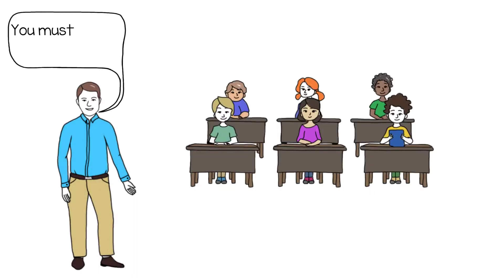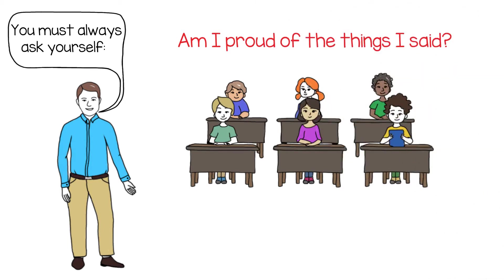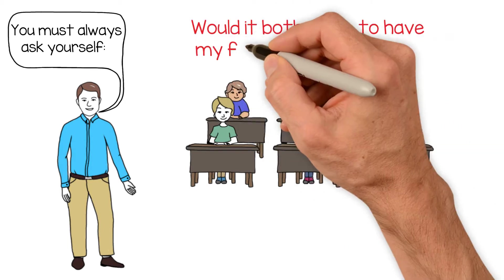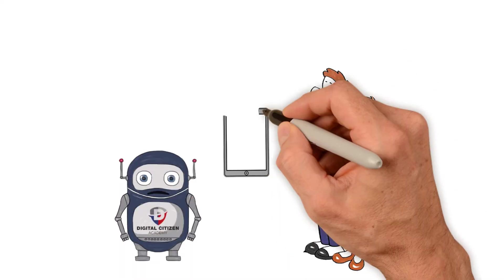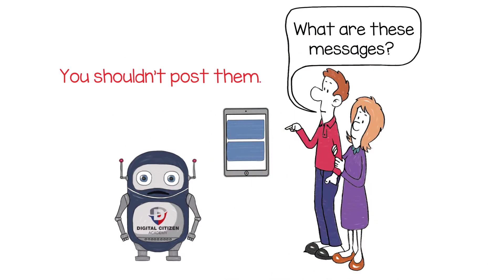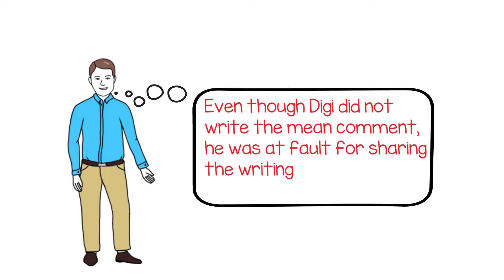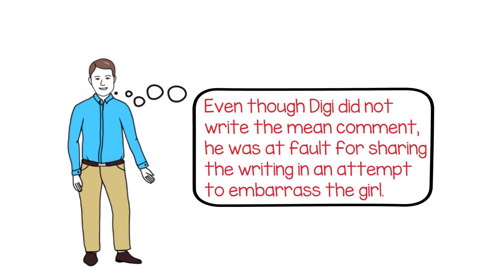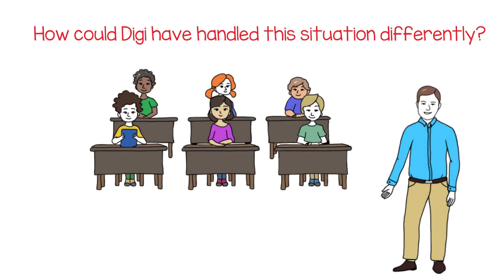You must always ask yourself: Am I proud of the things I said? Would it bother me to have my family read my words? If you would feel embarrassed or disappointed in yourself to have your words seen by family members, that is a signal that you shouldn't post them. Even though Digi did not write the mean comment, he was at fault for sharing the writing in an attempt to embarrass the girl. How could Digi have handled this situation differently?